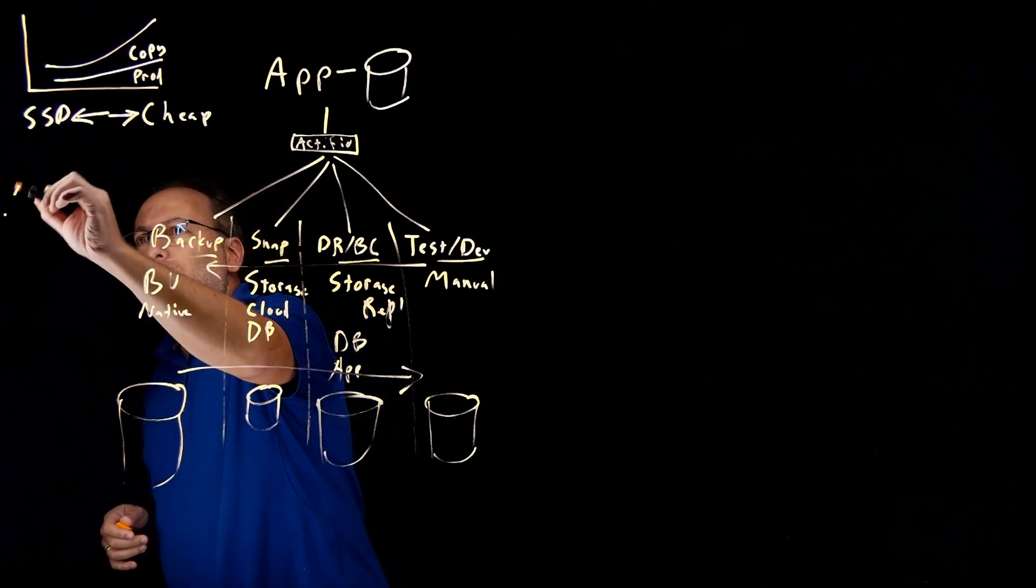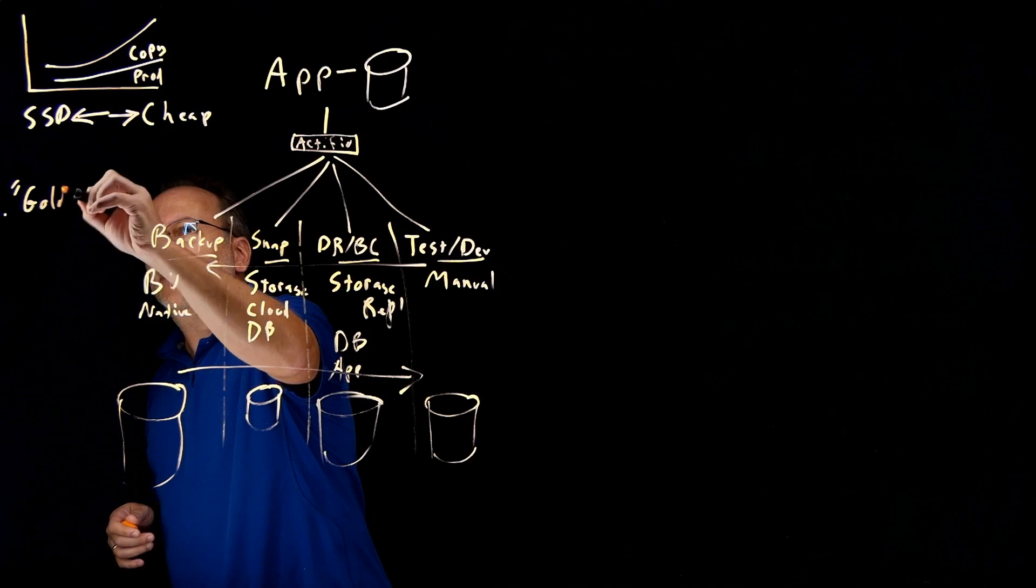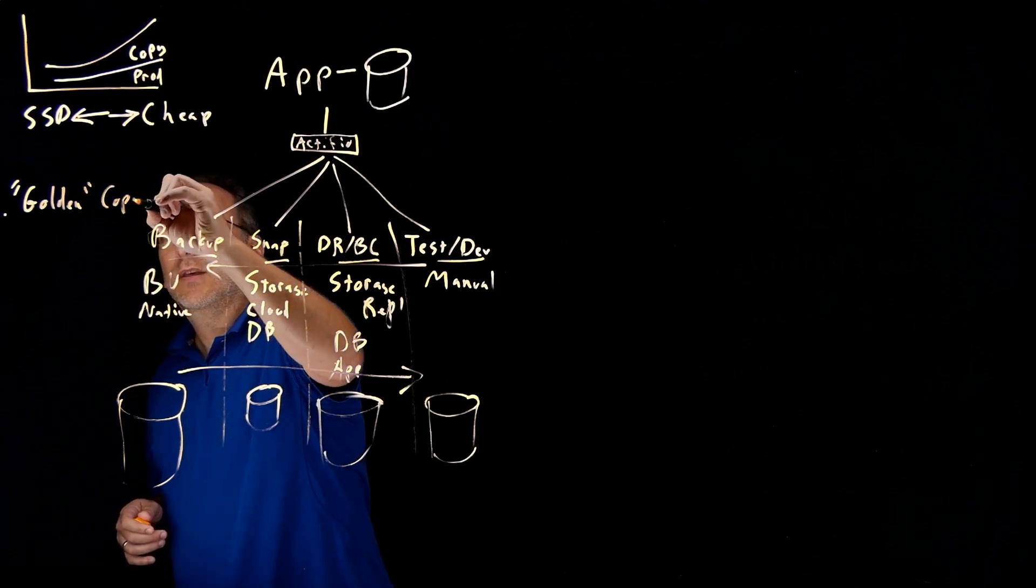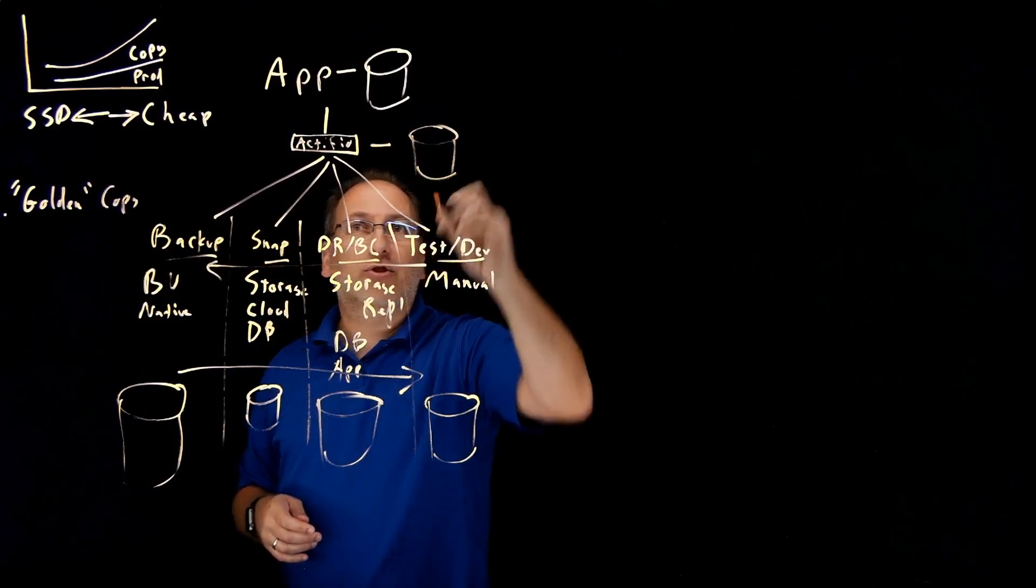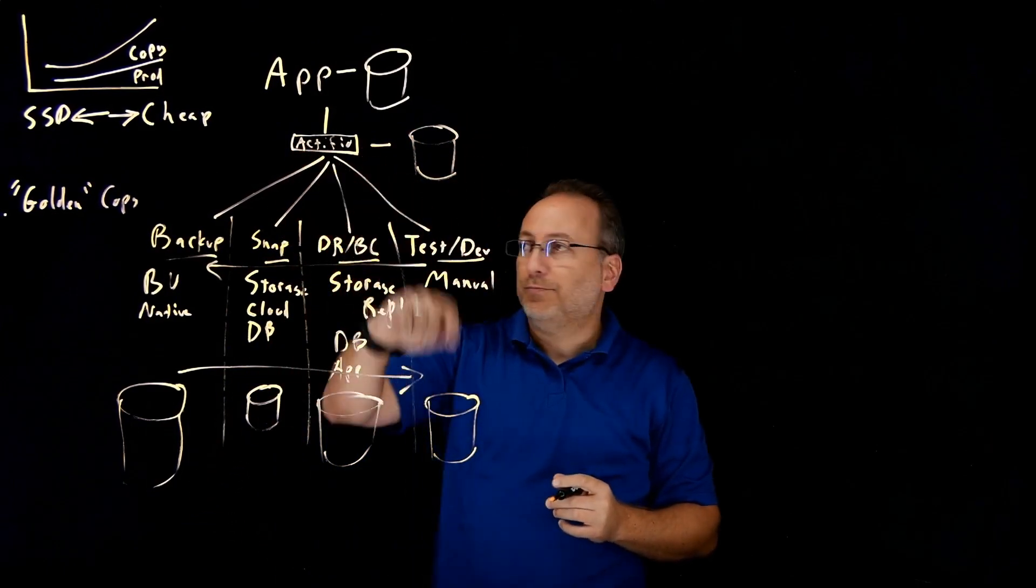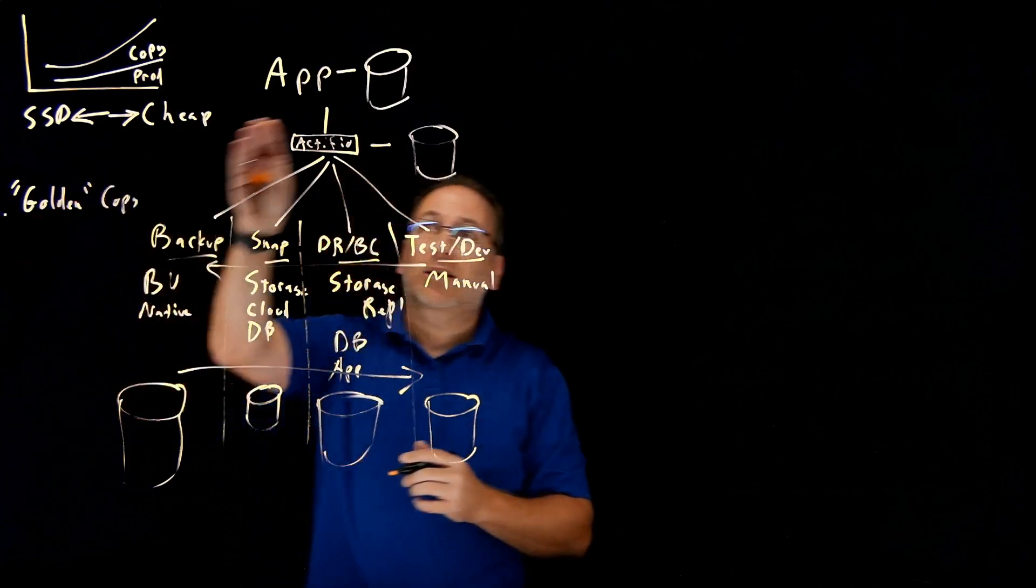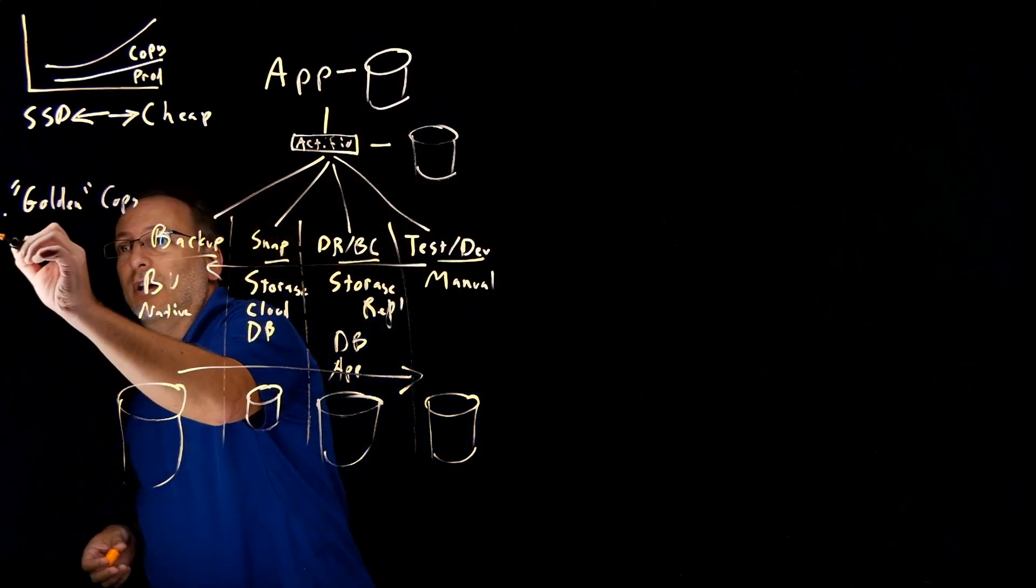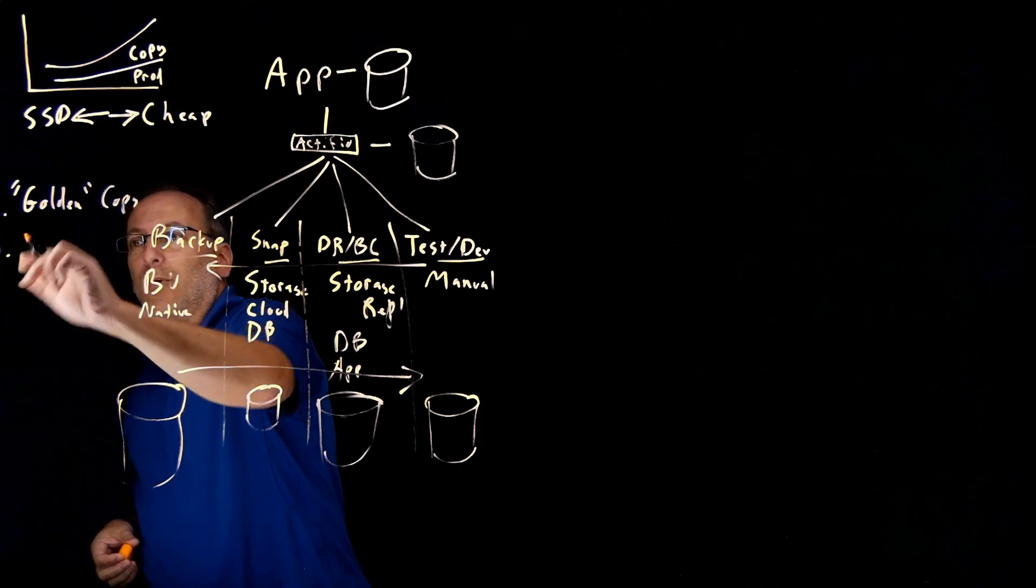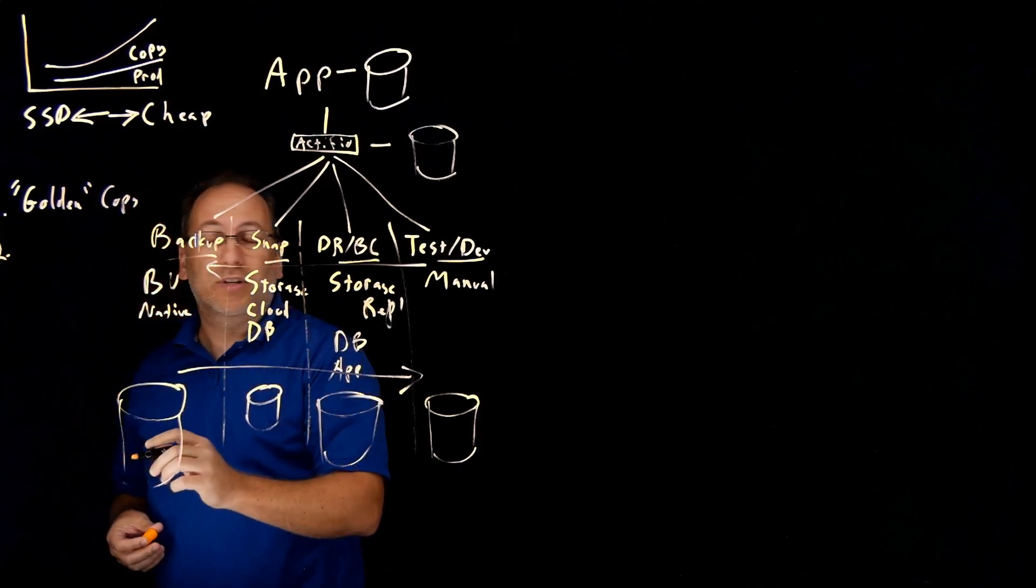One, it makes what we call a golden copy. This is a copy on dedicated storage assigned to the Actifio solution. This golden copy is copied from the source. I'm going to cover in another series, another video, how that process works in more detail.